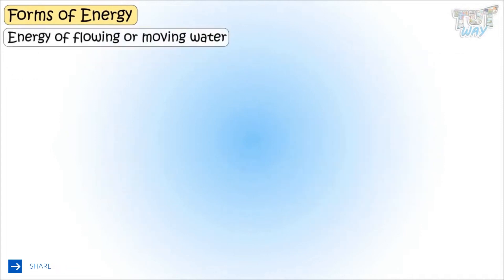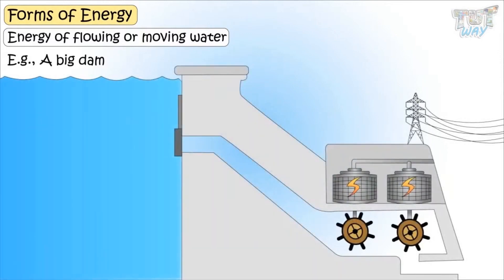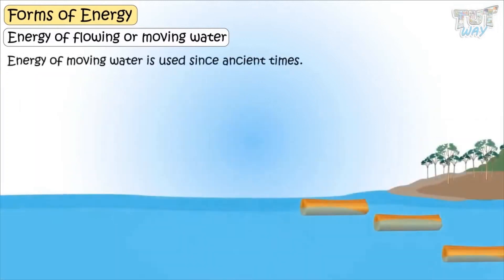Now let's learn energy of flowing or moving water. The flowing water has energy that can be used to do some useful work. Here is an example. In big dams, water is stored in big reservoirs. And from these reservoirs, water is thrown from big heights on turbines. This fast-falling moving water rotates the turbines, which in turn runs the generators that produce electricity. Energy of moving water is used since ancient times. Big logs of wood were thrown in water and the energy of flowing water was used to transport big logs of wood from one place to another.